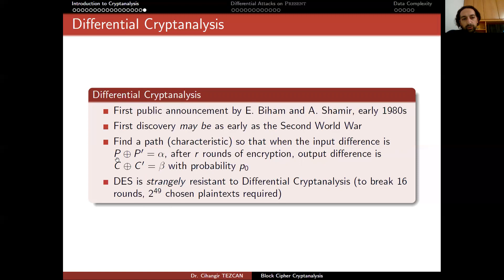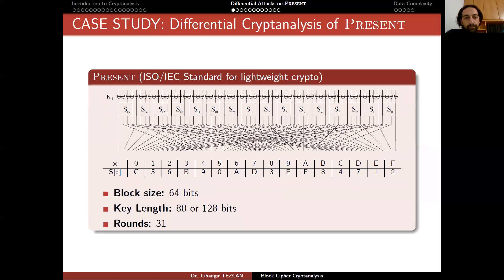By 'difference' we mean XOR is alpha: when you XOR P with alpha, you get P'. So you are choosing P'. You cannot perform the attack with random P and P' — their XOR must be alpha. This is why you are requesting plaintext blocks in a special format, and this is what makes this attack type a chosen plaintext attack.